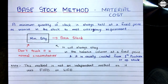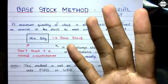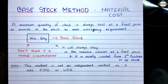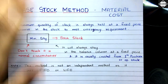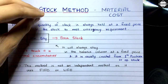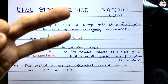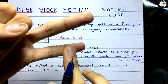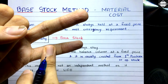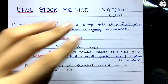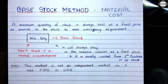Previously we have seen FIFO, simple average, and weighted averages. Now here we are seeing another one called the Base Stock Method. You have to understand one thing: this Base Stock Method is not an independent method in itself — it's actually used in conjunction with FIFO or LIFO. So you must be very clear with FIFO and LIFO and should be able to solve those problems. This is just a different variant of FIFO.